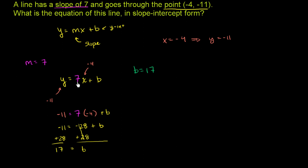So we know m is 7, they told us that right at the beginning. And now we know b is 17. So the equation of our line is y equals 7x plus 17.